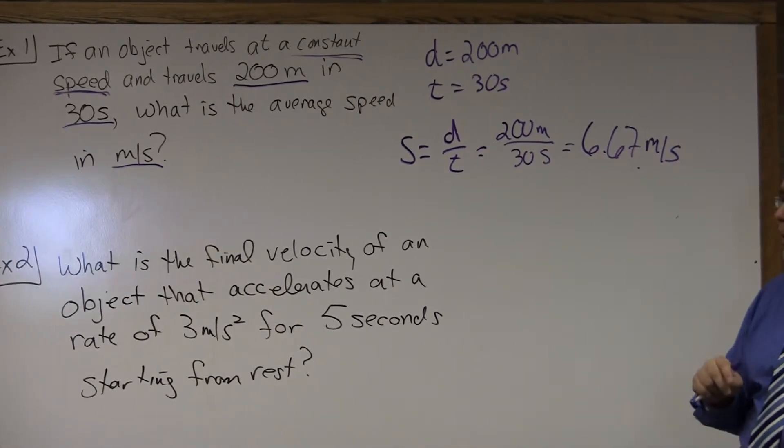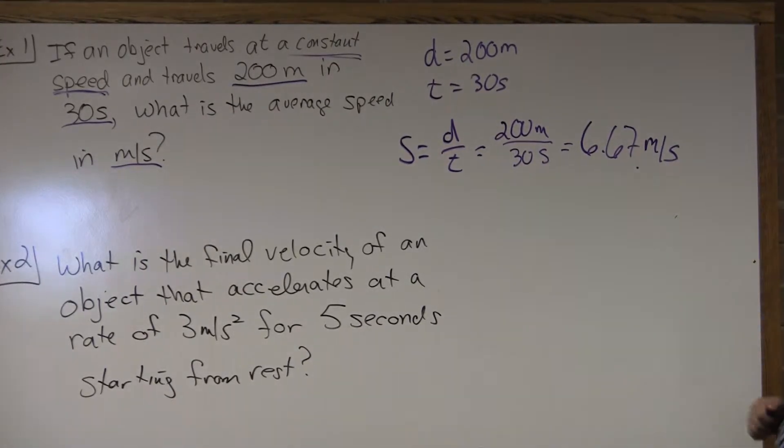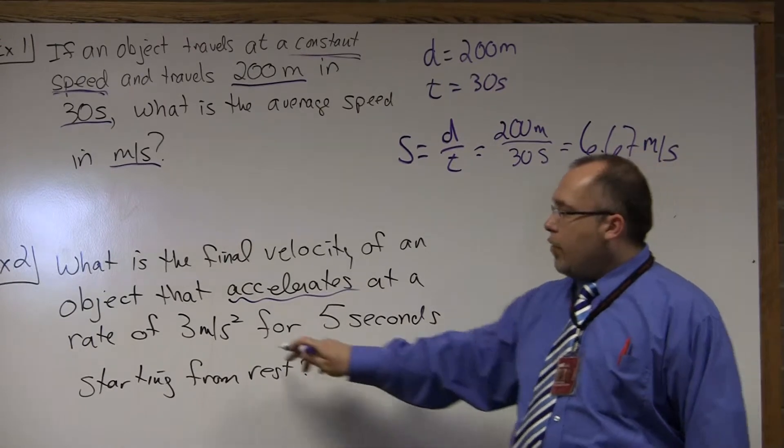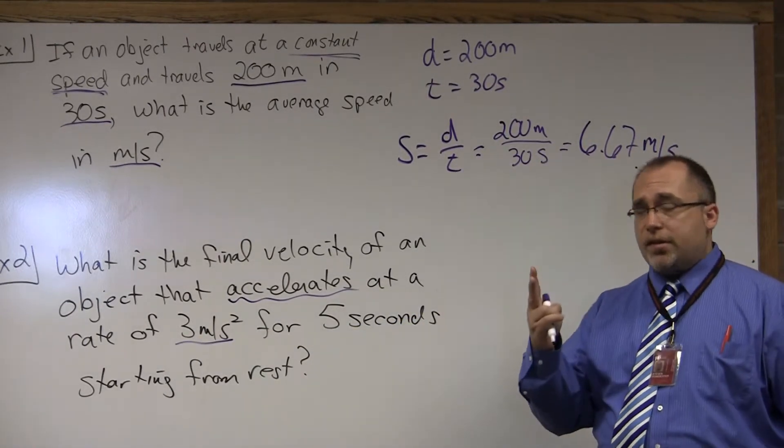Let's look at the second example. Example two. What is the final velocity of an object that accelerates at a rate of 3 meters per second squared for 5 seconds starting from rest? So, again, let's look at our givens here. What jumps out? Accelerates at a rate of 3 meters per second squared. So, there's your cue. Two cues to let you know it's acceleration.